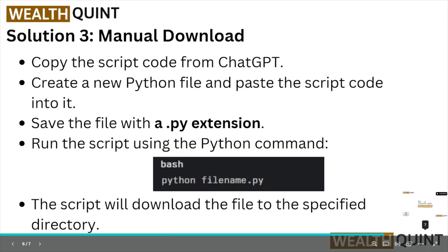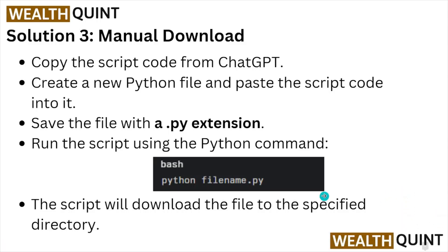Solution number three: manual download. Copy the script from ChatGPT, create a new Python file, and paste the script code into it. Save the file with a .py extension and run the script using the command 'python filename.py'. The script will download the file to the specified directory.